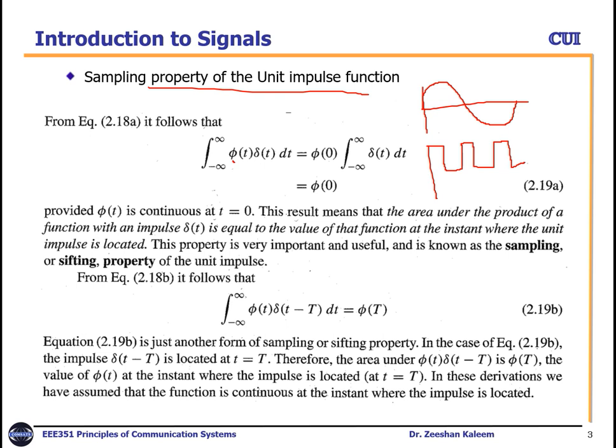From the equation, if we consider a function phi(t), and multiply it with an impulse — which every one of you knows — the impulse is a function that has an amplitude of one at time zero. So if we put time equal to zero, this is our function phi(t) and this is time zero.